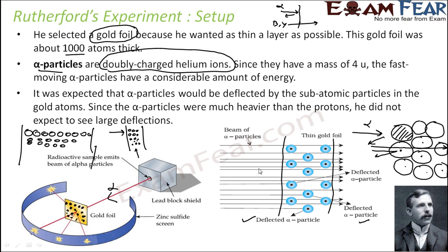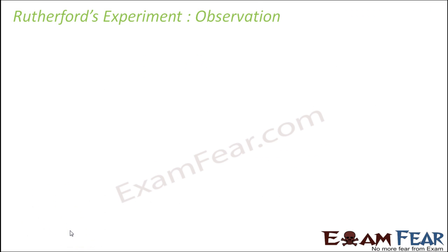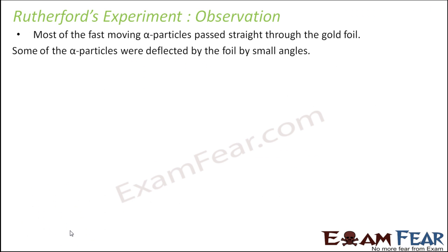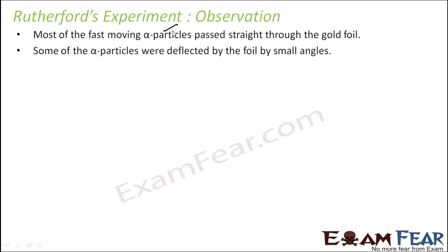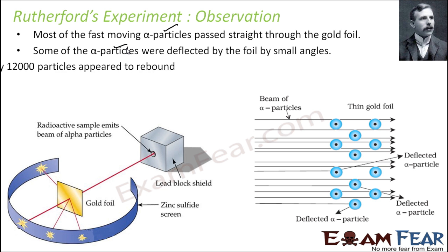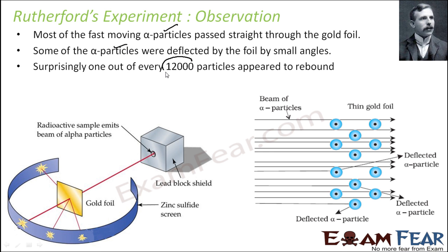In the experiment, Rutherford placed a gold foil with an alpha particle source. He found that most alpha particles passed straight through. Some were deflected by small angles, and only one out of 12,000 particles actually rebounded back. Very few particles rebounded, most passed through, and a few were deflected.